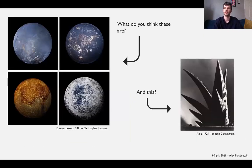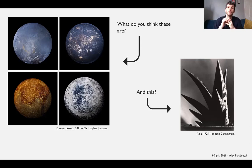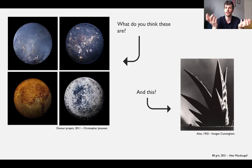I put this up because I basically got the participants to have a think about what they reckoned these things were. We had some guesses - marbles or planets - but actually you might be surprised to know that it's the bottom of frying pans. And on the right is an aloe vera plant. This is just a way of showing that stuff just at your home, inside your house, can be thought about in really interesting, creative ways.